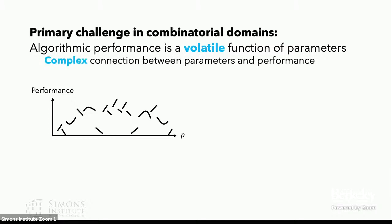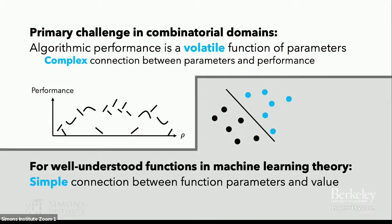So overall, the algorithm's performance is just a very complex function of its parameters. And this is unlike functions that we really understand well from a theoretical perspective in machine learning, whereas there's typically a fairly straightforward connection between a function's parameters and its value on any given input. Since we don't have this predictable structure in the context of algorithm configuration, we have to understand what structure is there which will allow us to provide provable guarantees.